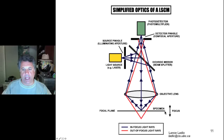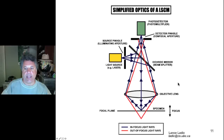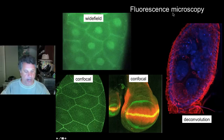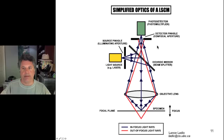If this is the specimen and this is a particular focal plane we're interested in resolving, by passing a thin pinhole over the specimen we exclude light coming from out-of-focal-plane depths in the tissue, and only emit light to our detector from a single focal plane. That is the power of laser scanning confocal microscopy, and allows sharp images to be obtained instead of blurry ones.